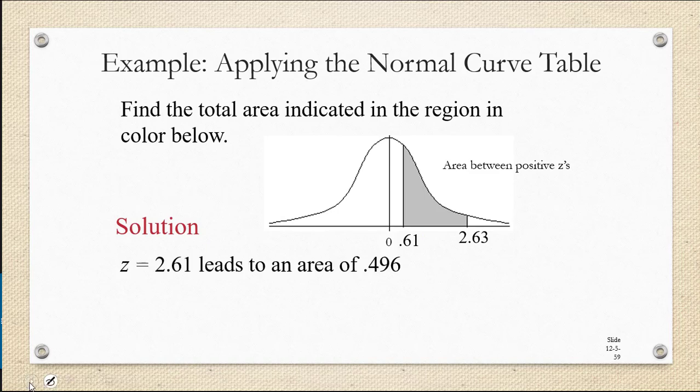We're still going to look up the z-score of 2.63, and we'll see on our z-table that corresponds to an area of 0.496. Also, we're going to look up 0.61, which corresponds to an area of 0.229.